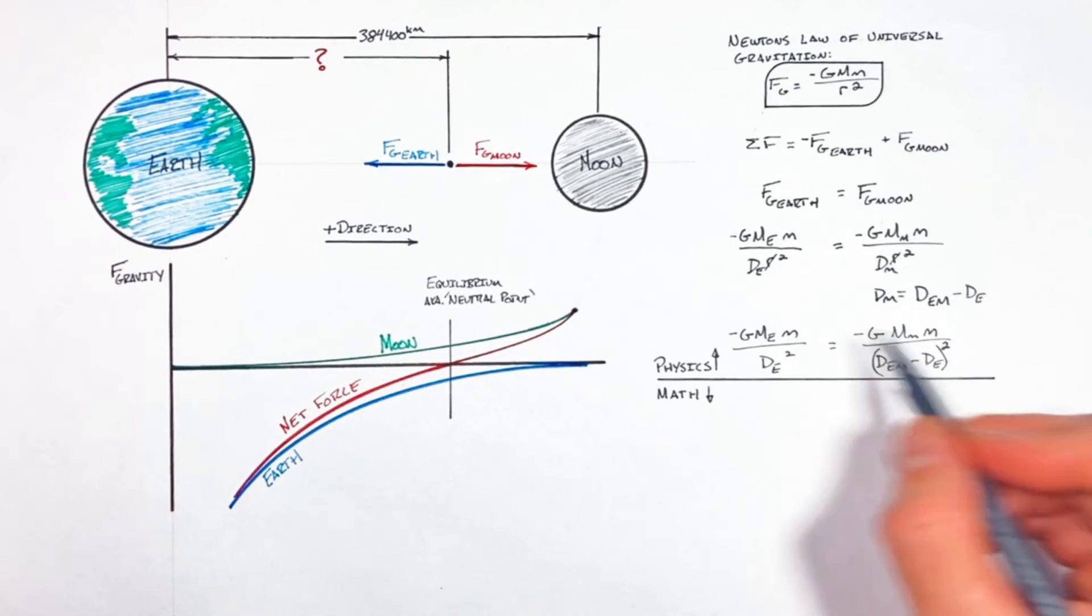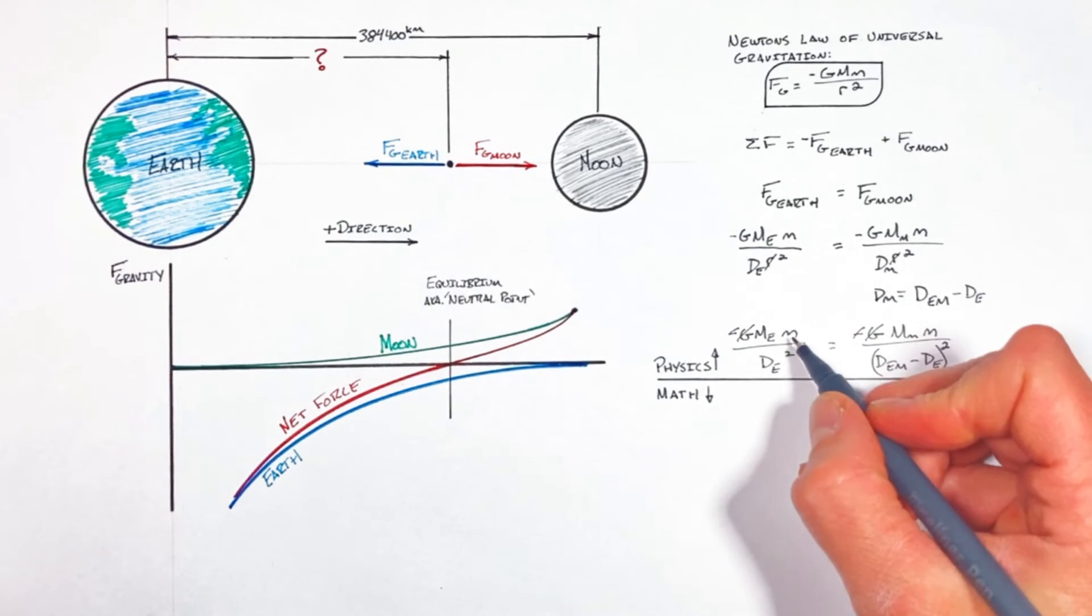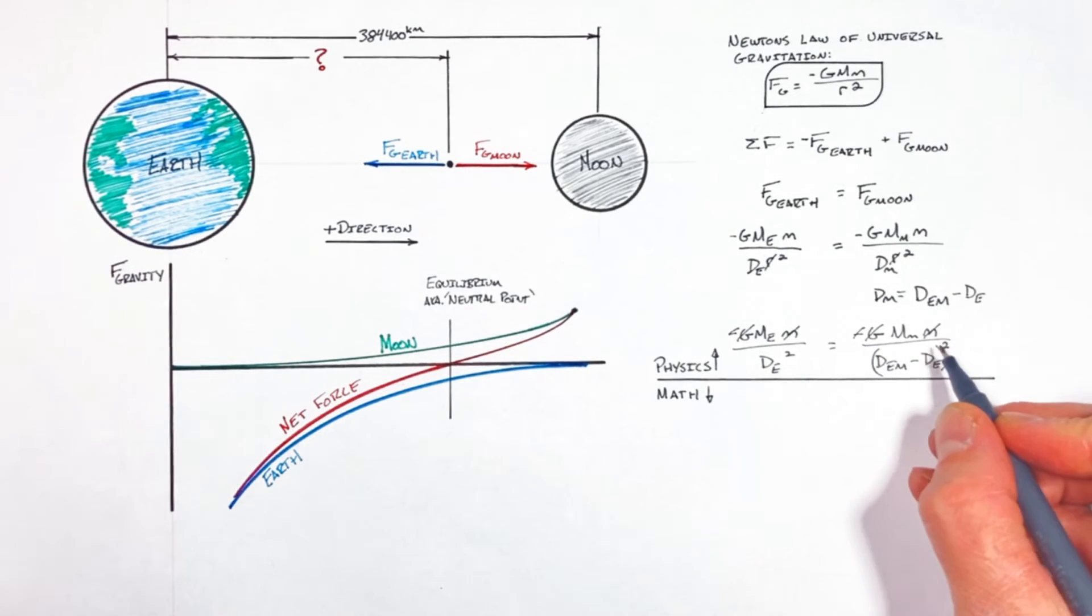Now the first thing is we've got a bit of a cancel party going on here. Our gravitational constant as well as the negatives are going to cancel out, and so is the mass of our spaceship, this little m.